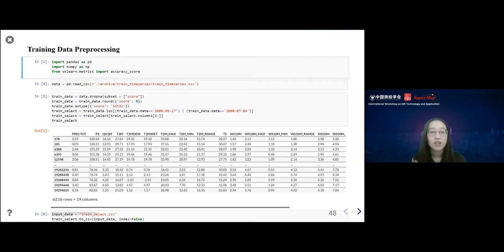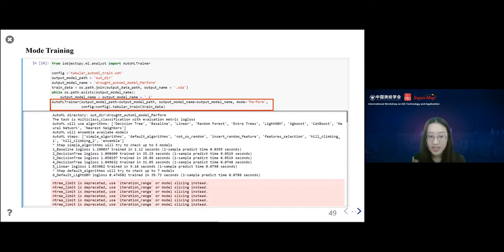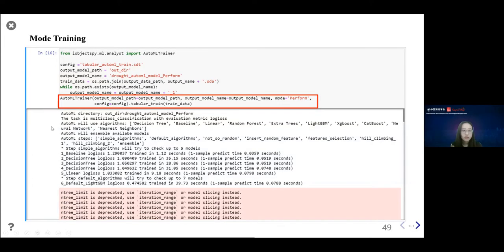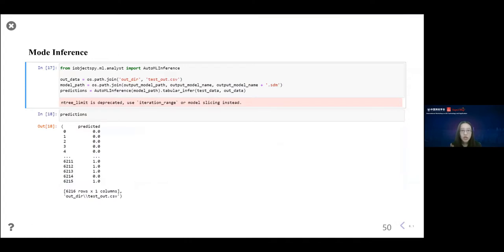As the model training part, we call the AutoML trainer classes to train our model. You can see those classes use many algorithms to train the model and perform hyperparameter tuning to find the best model. You can see from zero to six, they try LightGBM and some decision tree algorithms to find the best models. The last part is the model inference. We use our best model on the test data to get predictions. Those numbers are the drought levels.